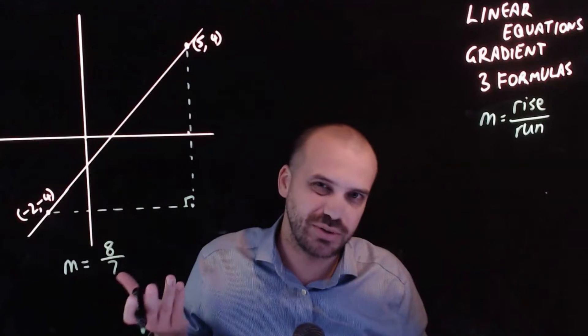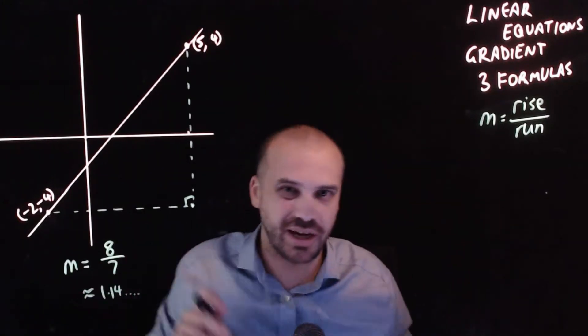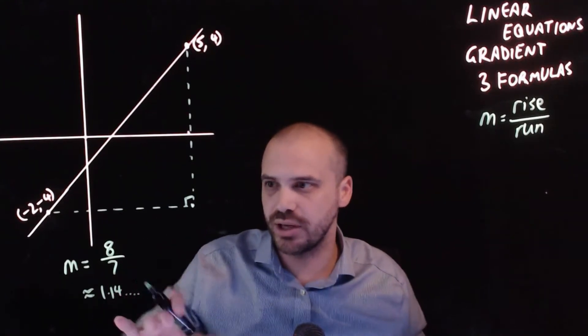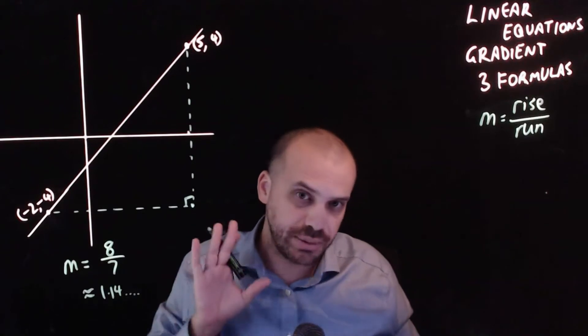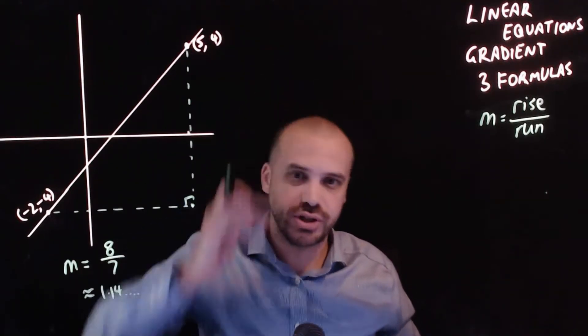Our gradient is eight over seven. We can leave it as a fraction. I guess we could do it as a decimal. It's not very nice though. It's 1.14 and a bunch of junk afterwards. In fact that decimal is not going to be useful to us at all here. We're going to be very interested in fractions for a reason that's going to become apparent soon. Okay that's formula number one, rise over run.